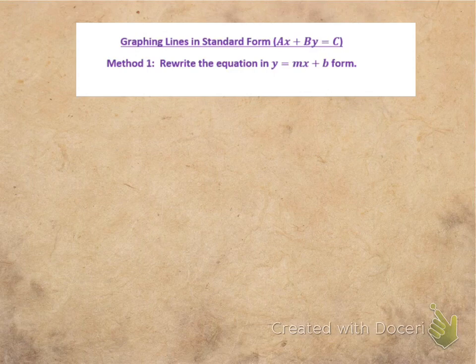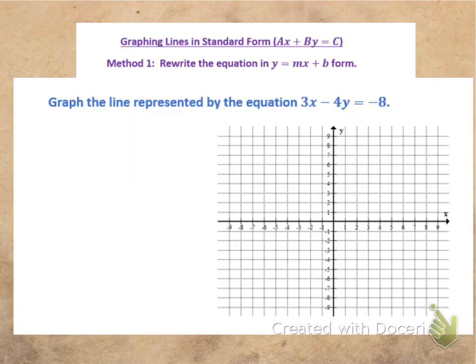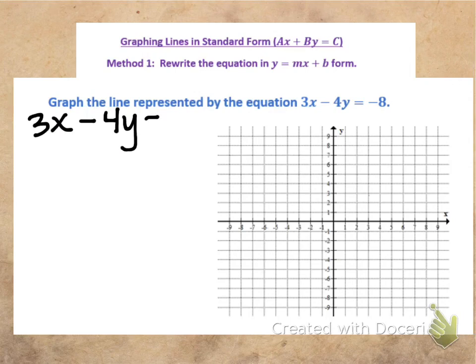Look at our first method here. In order to graph a line in standard form, what we need to do is rewrite the equation in slope-intercept form that we are very comfortable with. Let's take a look at our example. I have a line represented by 3x minus 4y equals negative 8. I can see this is definitely not in slope-intercept form because the x and the y terms are both on the left side of the equation.